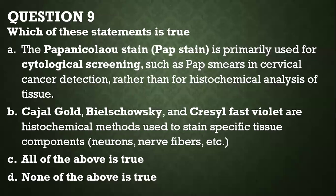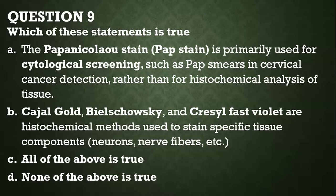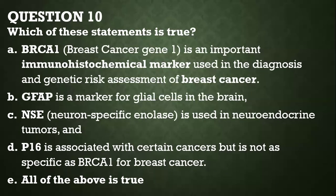Question number nine: which of the statements is true? The Papanicolaou stain, also known as the pap stain, is primarily used for cytological screening such as pap smears and cervical cancer detection, rather than histochemical analysis of tissue. That is correct. Cajal, Bielschowsky, and Crystal fast violet are histochemical methods, as opposed to the pap stain. These other methods are histochemical methods used to stain specific tissue components like neurons and nerve fibers. All of the following statements are true.